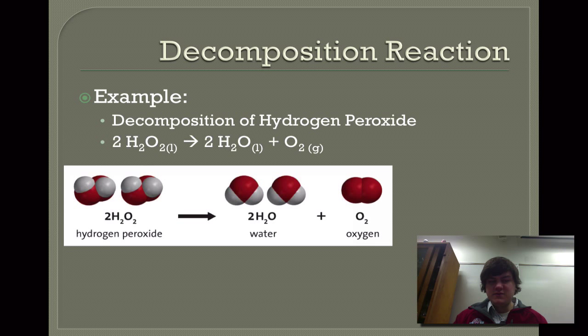But again, we're taking one type of reactant, one substance, having it undergo decomposition. That could mean heating it, exposing it to light, applying electricity to it. Many different ways that this can happen. But it will ultimately form two or more substances as the products.